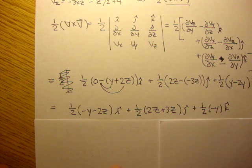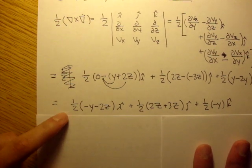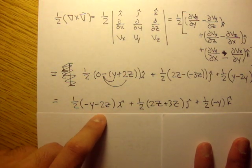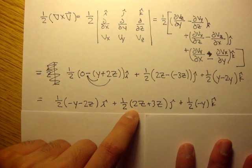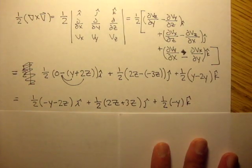We simplified it a little bit more. We already distributed the 1 half in. We get 1 half of negative y minus 2z in the i plus 1 half times 2z plus 3z in the j plus 1 half negative y in the k.